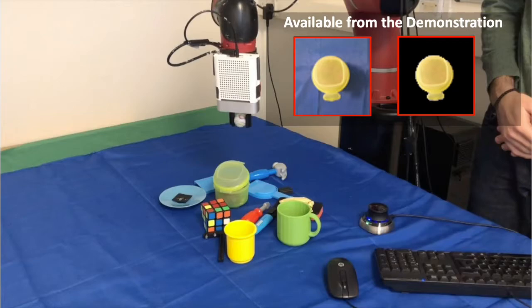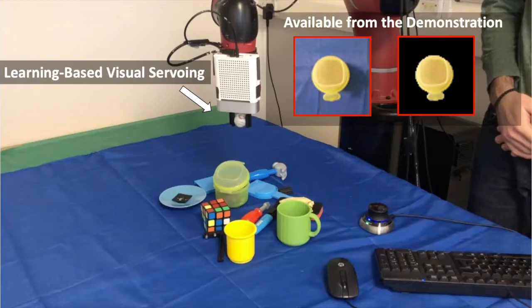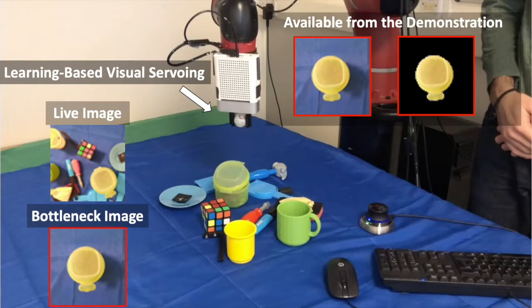At deployment, we start by using our learning-based visual servoing controller. First, this uses the bottleneck and live images to isolate the object of interest in the scene.